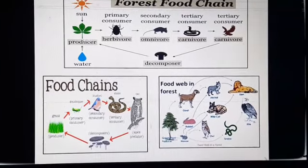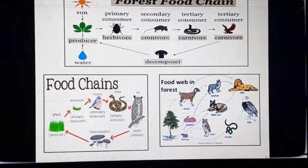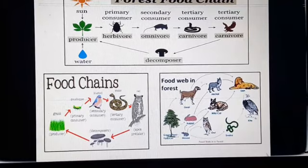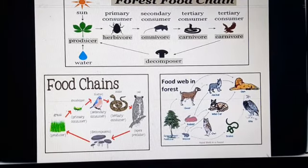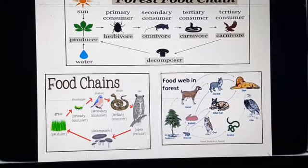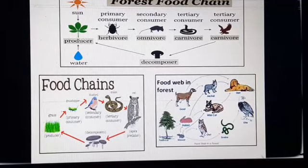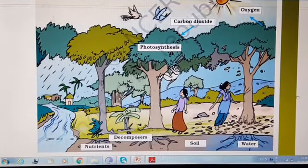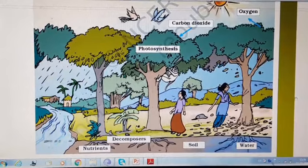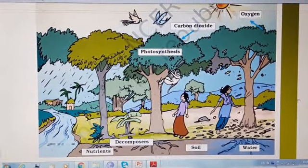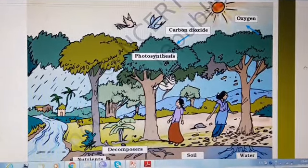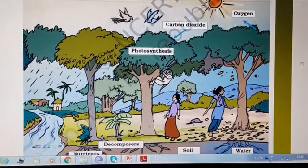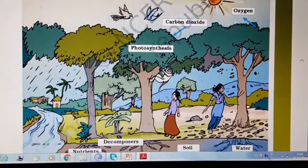Please note that every food chain in the forest starts with plants, because plants are the producers of food — they are autotrophs. The first step in every food chain is plants. Plants and animals are interdependent on each other. We must also include decomposers, because they play a great role by converting dead and decaying plant material into humus.